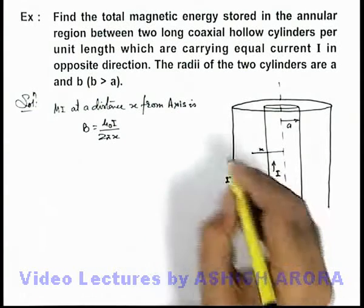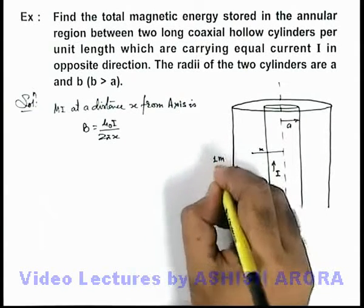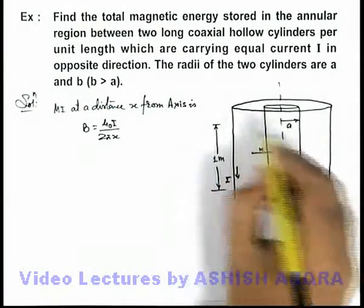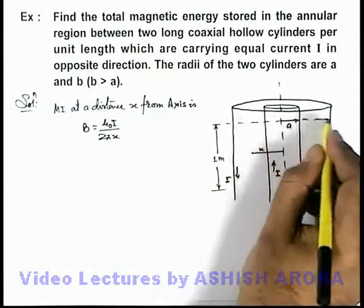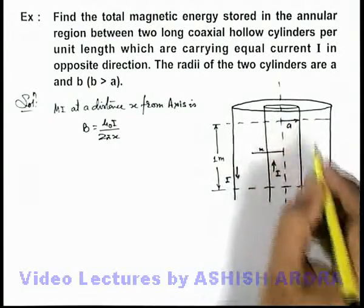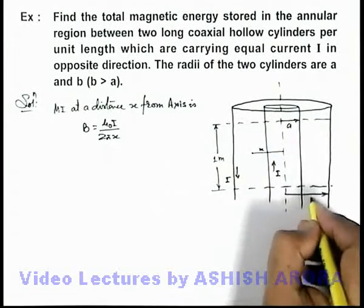And to find out the magnetic energy per unit length, that means we consider a unit length of this cylinder in which we are required to find the total energy, and the radius of inner cylinder is a and that of outer one is b.